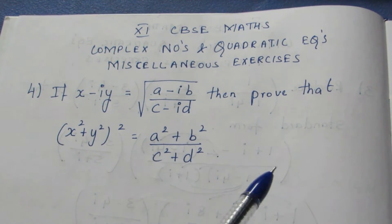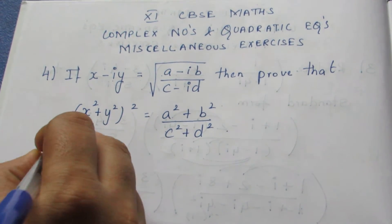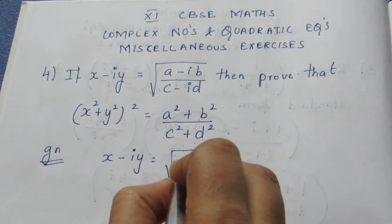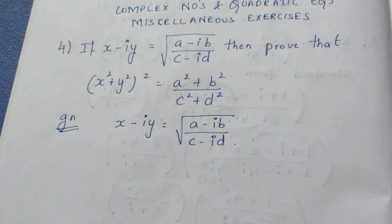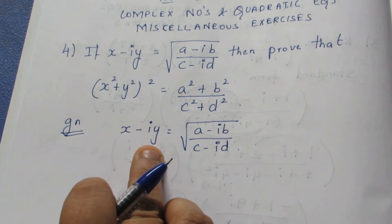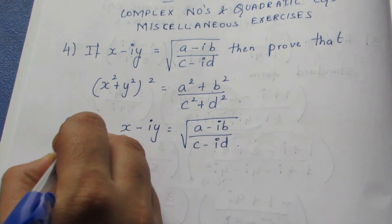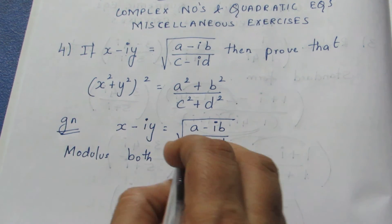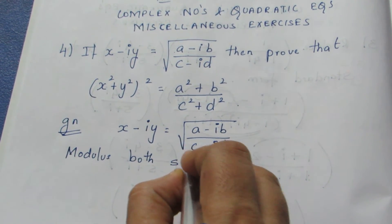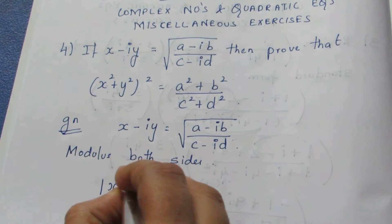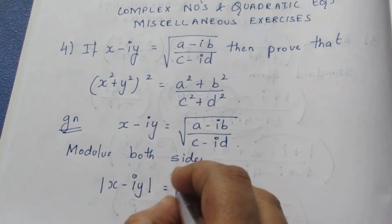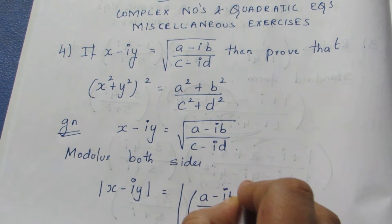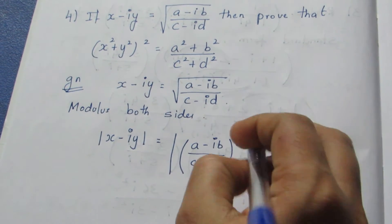We will take the given and proceed with the proof. Given is x minus iy equals root of (a minus ib) by (c minus id). Here it is in root form and it is a complex number. So I am going to take modulus on both sides. We use modulus because we have a modulus z formula we can use. Taking modulus both sides, it becomes modulus of (x minus iy) equals modulus of (a minus ib) by (c minus id), the whole power half, because root can be written as power half.